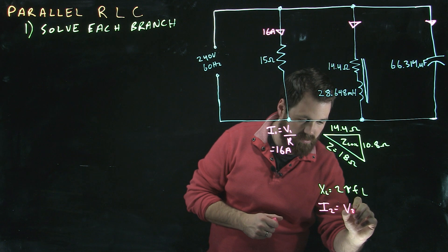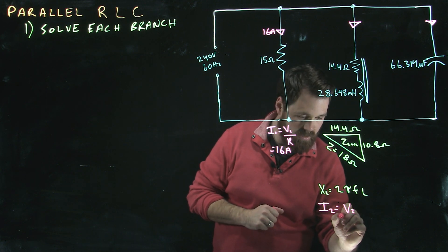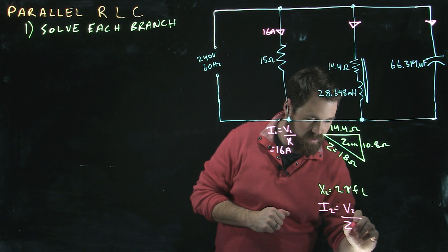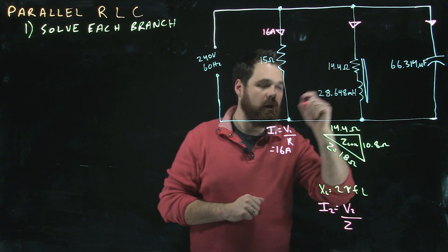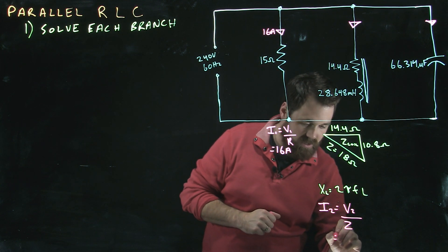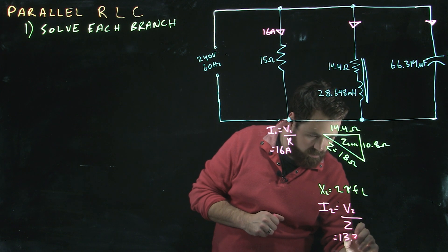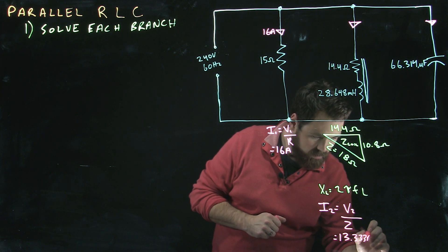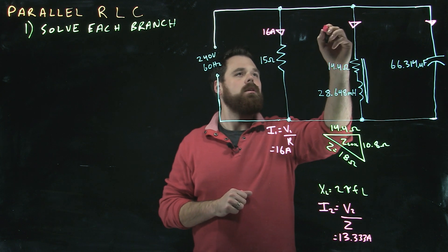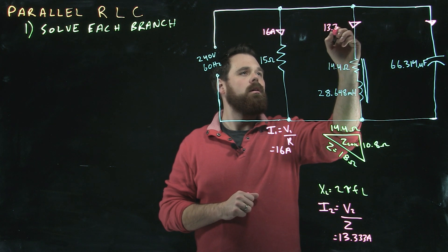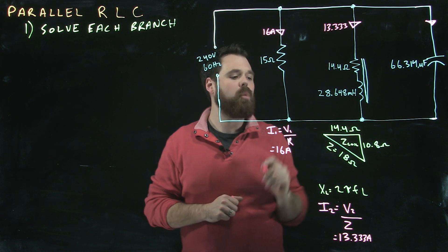Equals V2, 240 volts, divided by Z of the coil here, which in this case gives us 13.333 amps. Perfect.